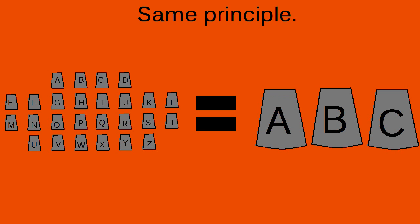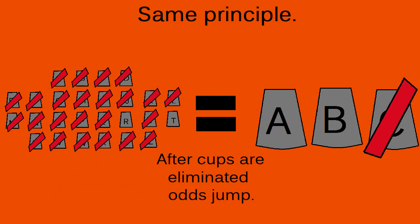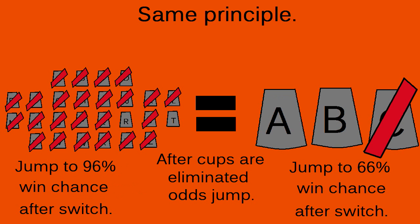The reason it is harder to see the connection with 3 cups is because of initial probability. When faced with only 3 cups, the worst probability you have is a 33% chance, which is relatively not bad. The initial probability of winning out of 26 cups is less than 4%. This makes the jump in probability much more noticeable when cups are being eliminated.